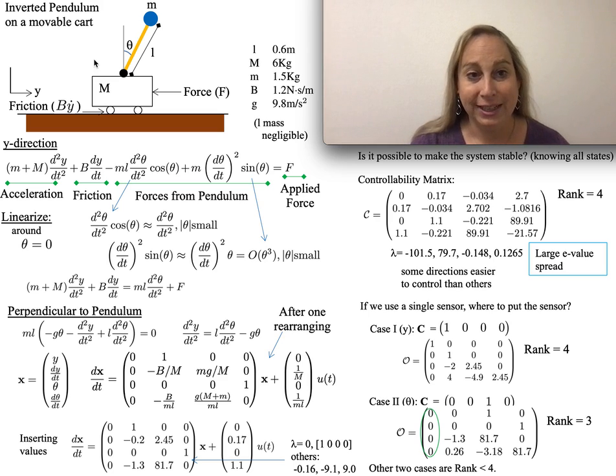The cart has a mass large M, and then an inverted pendulum with a mass small m at the top. The mass and moment of inertia of this rod are not important—it's basically just the mass at the top.